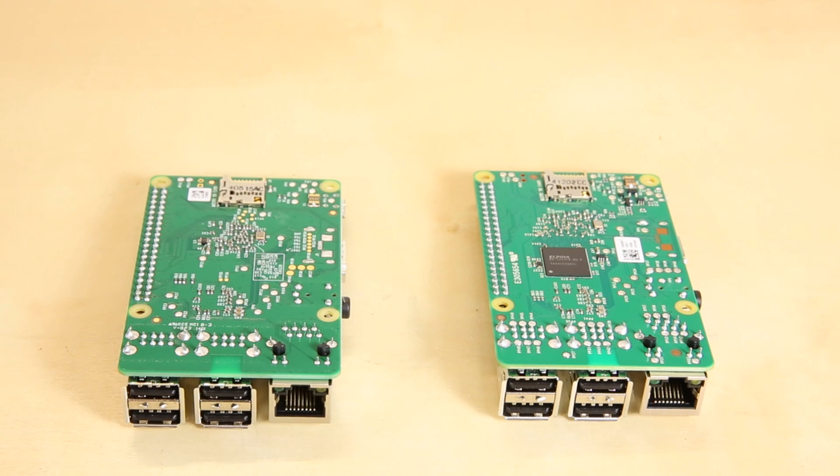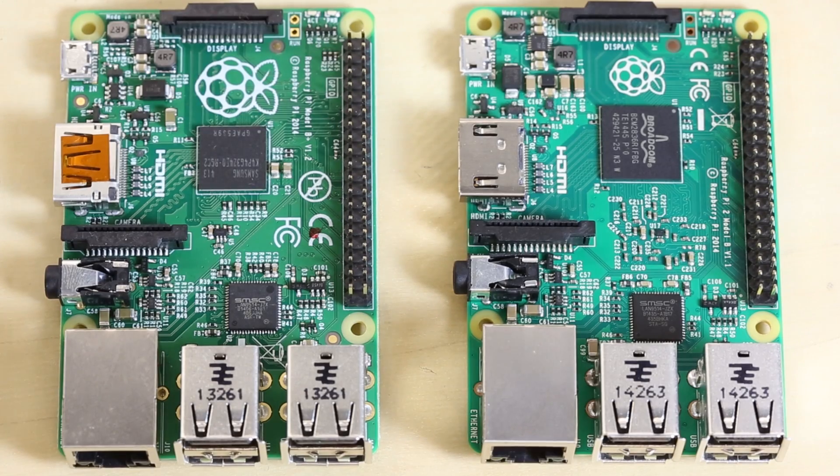Probably the biggest change is that they upgraded the processor on the B Plus from a Broadcom BCM 2835 to a Broadcom BCM 2836 on the version 2. Now, what does that one number mean? Well, a few things. First of all, you get a little bit more speed. Instead of 700 megahertz, it's now 900 megahertz. Additionally, they've upgraded from a single-core processor to a quad-core processor. That's much better for multitasking.